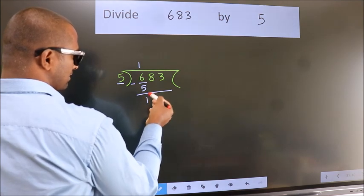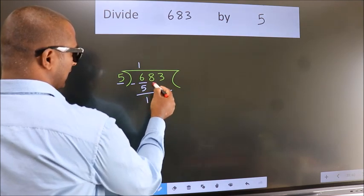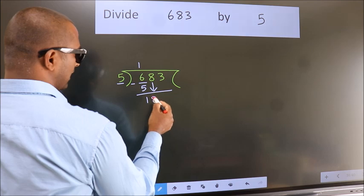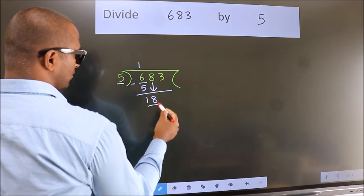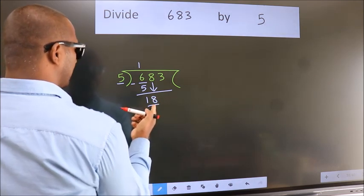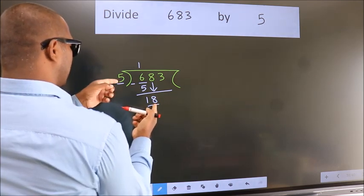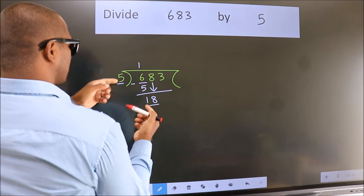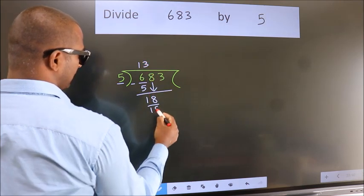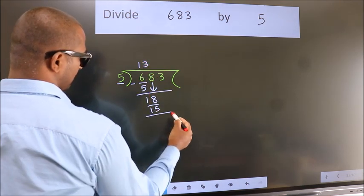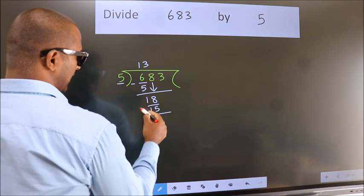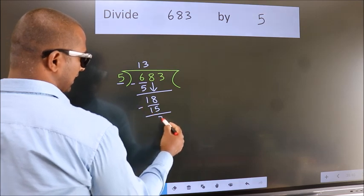After this, bring down the beside number. So 8 comes down, so we have 18. A number close to 18 in the 5 times table is 5 threes are 15. Now we subtract. We get 3.